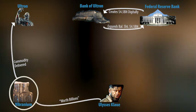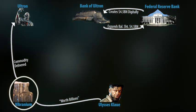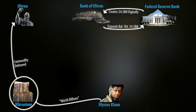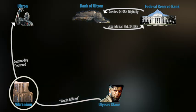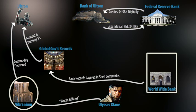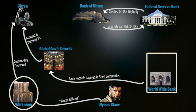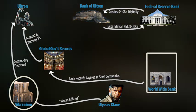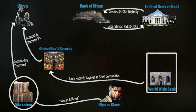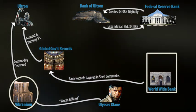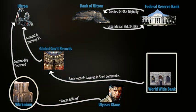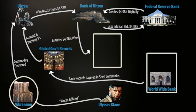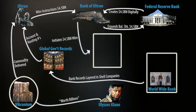So Ultron would have expanded the balance sheet of the Federal Reserve Bank of the United States, because it seemed like he was using US dollars for the transaction. Once the money was created, he would have to figure out where to route it. Having access to all government and banking records, he would be able to cross-reference and dig into layers upon layers of documents — like shell company charters and their associated bank accounts — to determine where Klaue kept his money. Once figuring that out, he would wire the money.